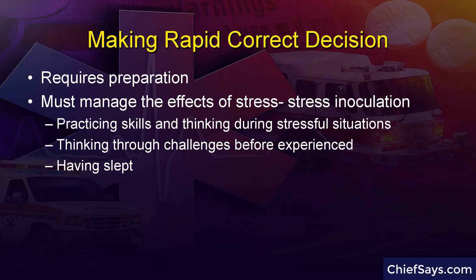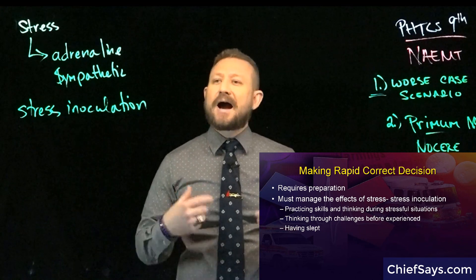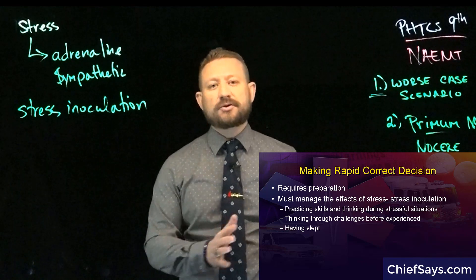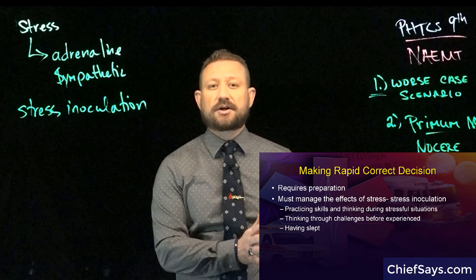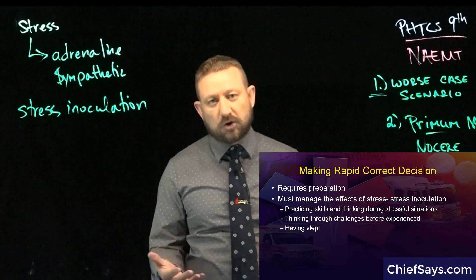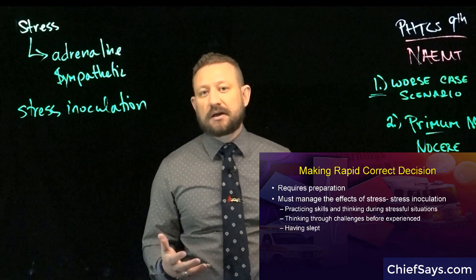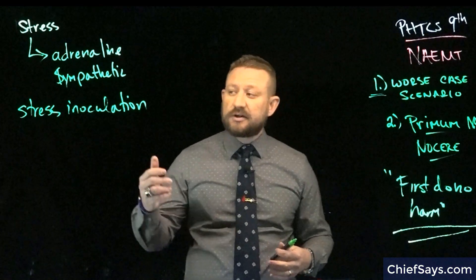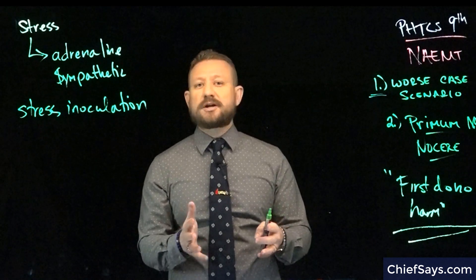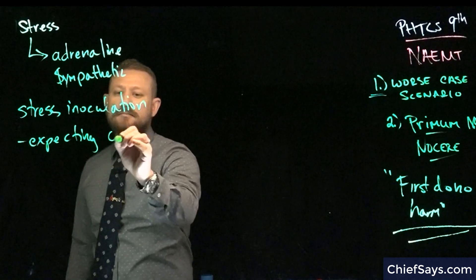A large part of stress inoculation is muscle memory. Stress inoculation means putting yourself through stressful scenarios when someone's life isn't on the line — practice. This helps your body know what to do when you are in that real stressful situation. It involves hours and hours of repetitious thought and practice. In your downtime, outside of the calls you're running, how many stress inoculation events do you practice to make sure your peak effectiveness occurs when you're still under that sympathetic response? Most people do the bare minimum, which puts them at risk of not meeting those challenges.